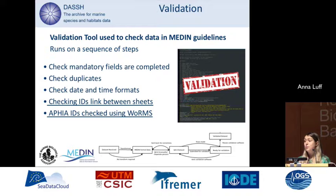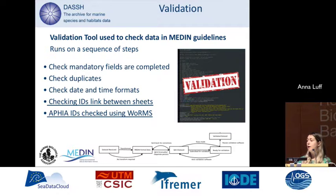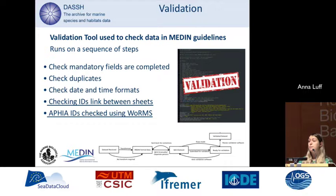Next, we run the data through our validation tool, designed using Python, which runs on a sequence of steps. It checks that mandatory fields are completed, checks for duplicates, and checks date and time formats. It also checks IDs between sheets and the AphiaIDs using WoRMS. The last two are processes that involve checking every single row in a dataset, which is incredibly time consuming manually — so this speeds up our process enormously. The tool returns a text file highlighting any issues, which are fixed and resubmitted until the data passes validation.